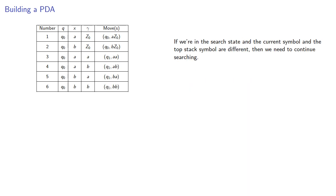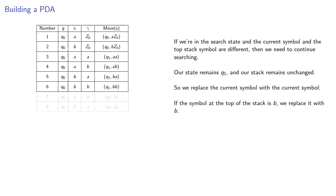If we're in the search state and the current symbol and the top stack symbol are different, we need to continue searching. Our state remains q1 and our stack remains unchanged. What's important to remember is that means we've replaced the current symbol with the current symbol. If the top is B, we replace it with B, and if it's A, we replace it with A.